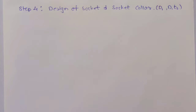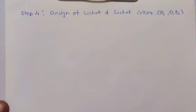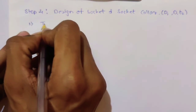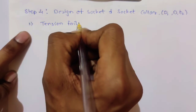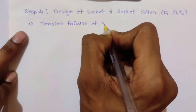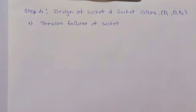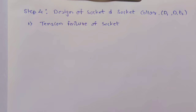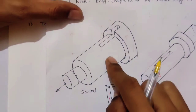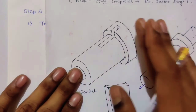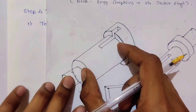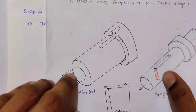The three formulas are tension, compression, and shear. First one is tensile failure of socket. Whenever you are using socket, just consider socket and socket collar — the rod you don't consider. So now we have socket and socket collar; just forget about the rod. You are applying tensile load over here.